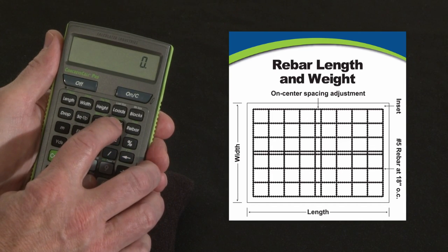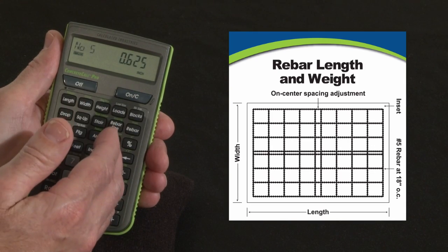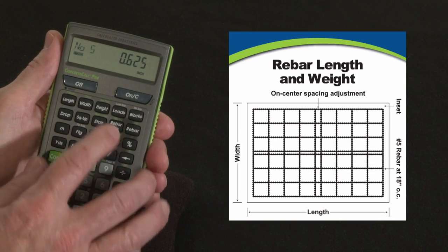First off, it's important to know that the rebar size defaults to a number 5. You can set that for any size you want, imperial or metric, any kind of size. We're going to leave that for now.